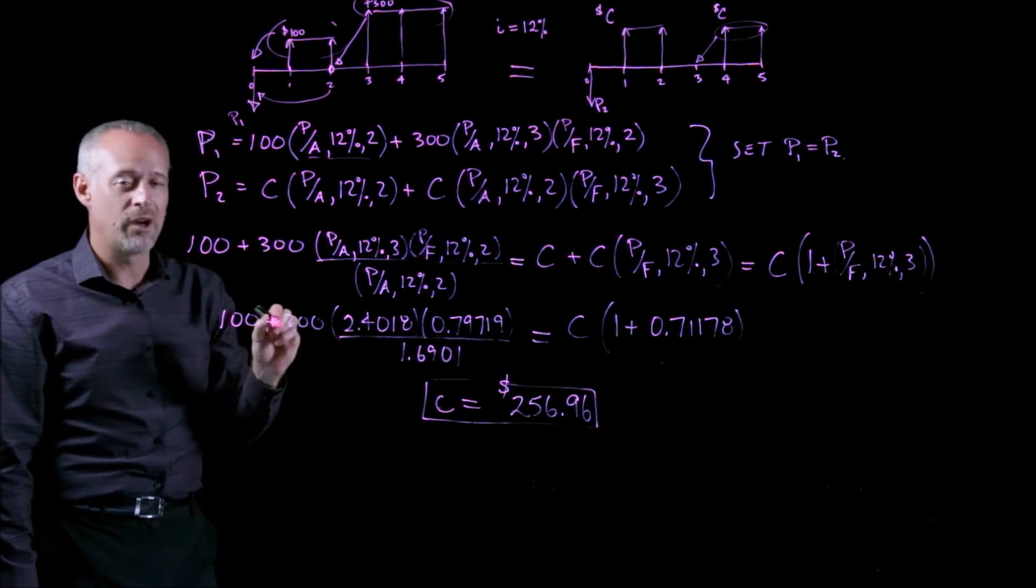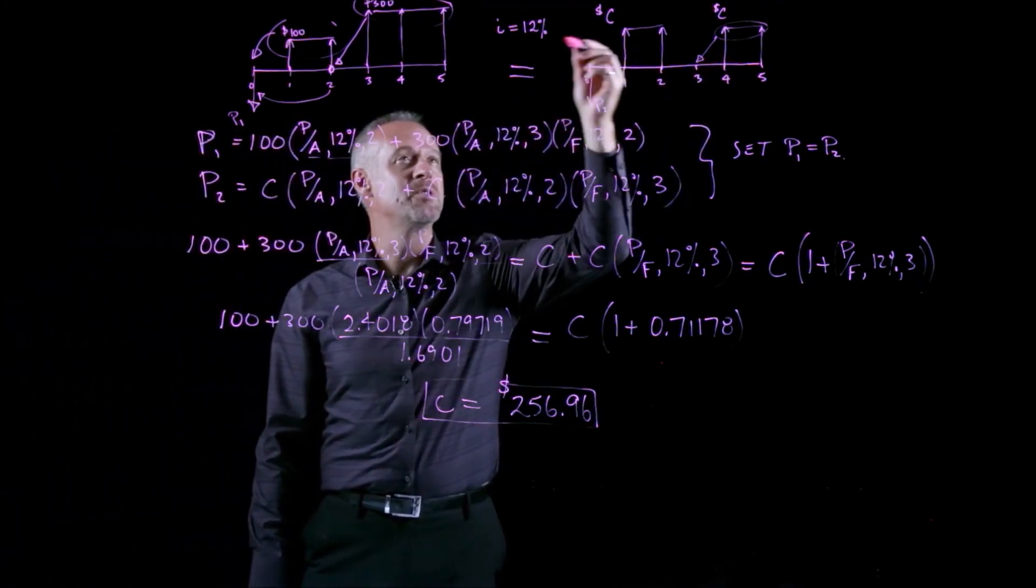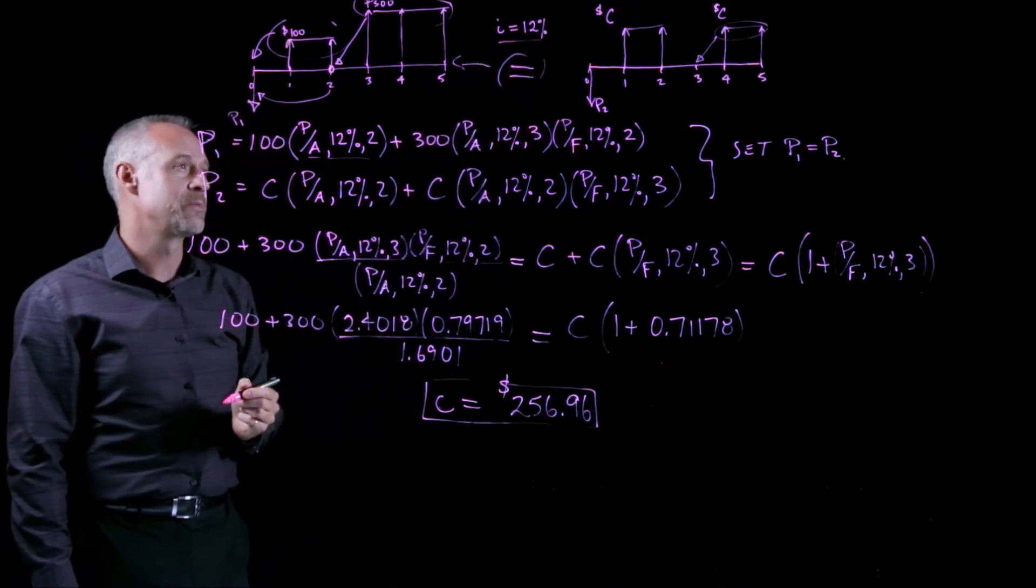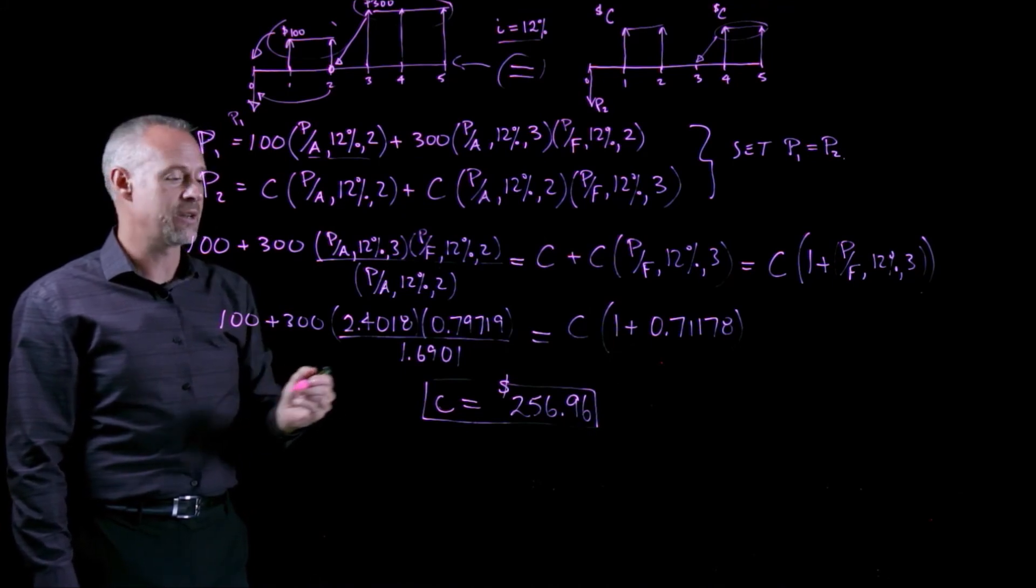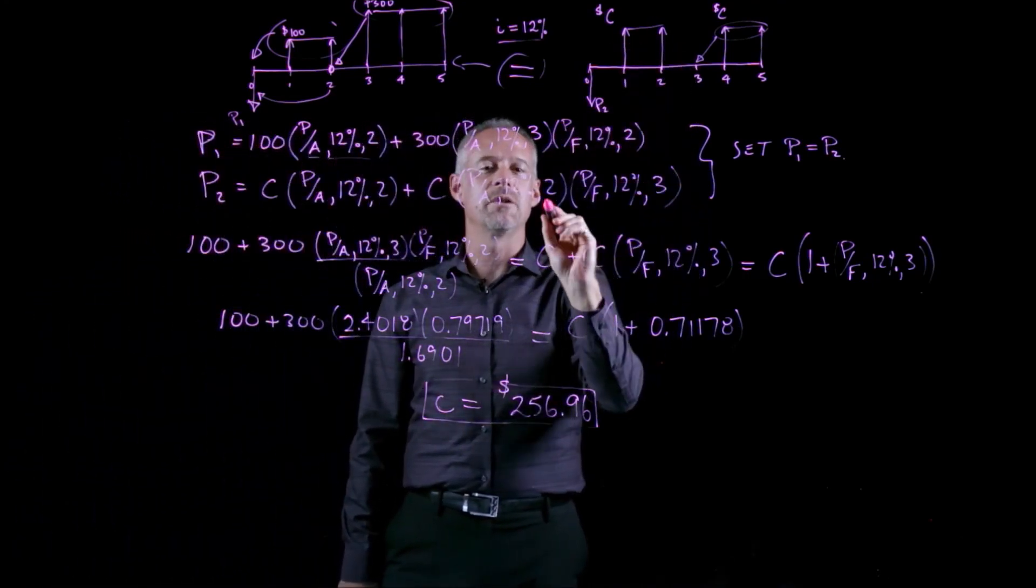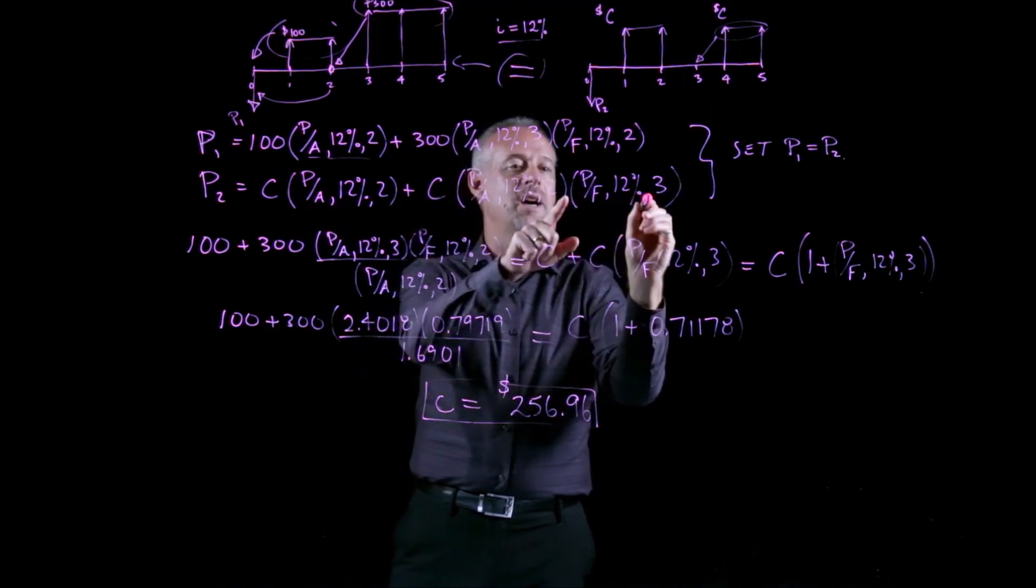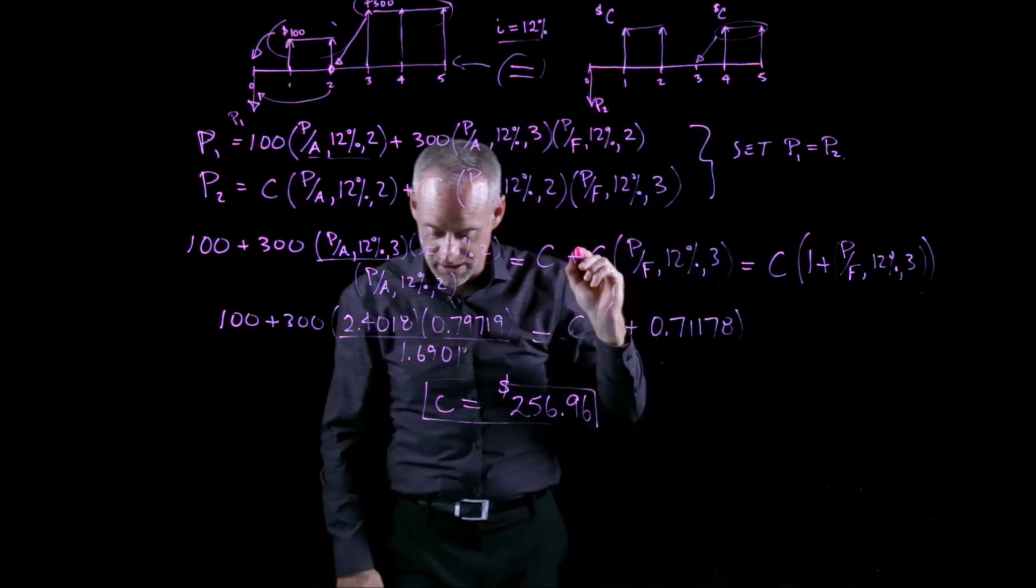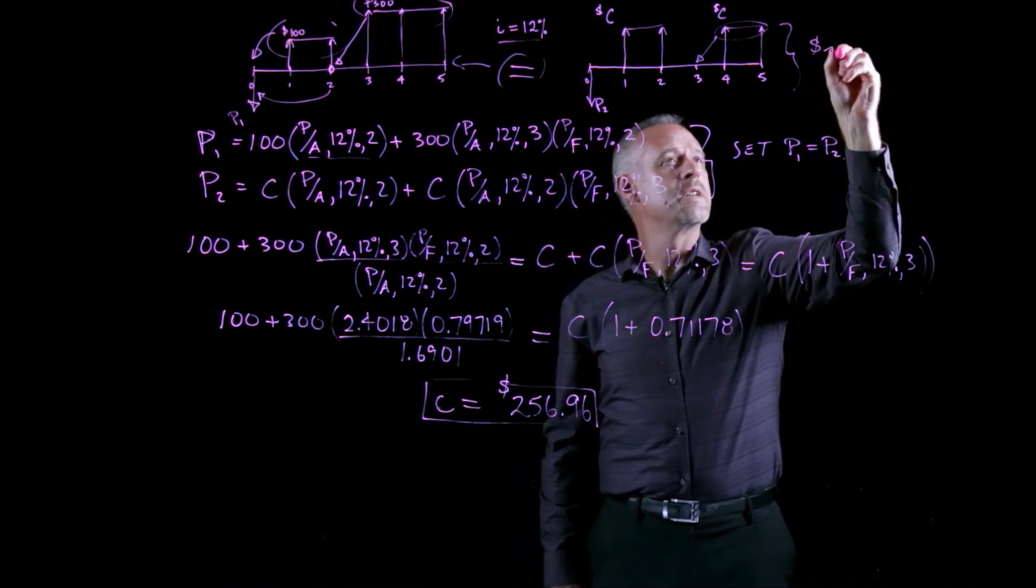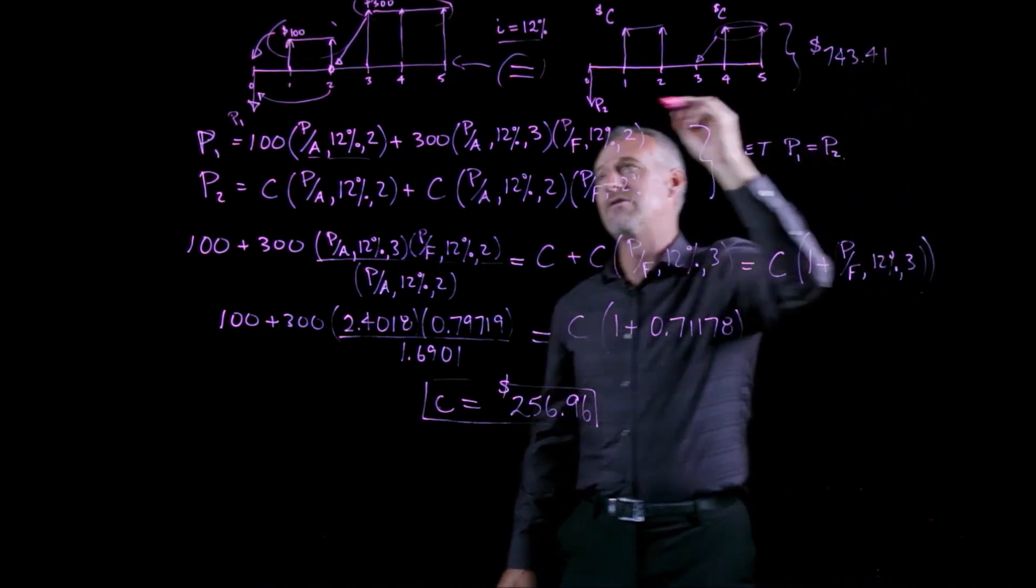Like I said at the beginning, this is just kind of a fun problem to try to see if we can figure out what value of C produces this equivalence with this cash flow diagram for an I equal to 12%. If you'd like to check this, you could go back, take the 256.96, multiply it by the compound interest factor, P given A, 12% and 2, here, and then do it again here times the P given F factor, and see what you end up with. I think you should end up with a value of 743.42, or 41.